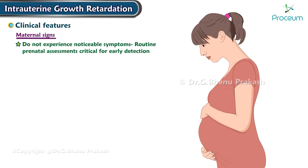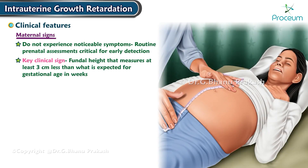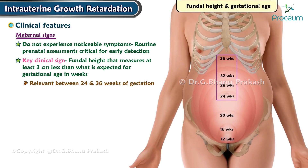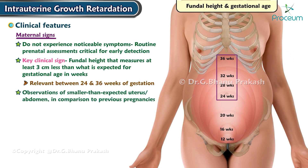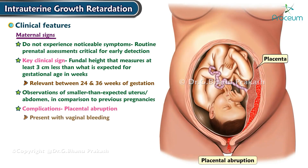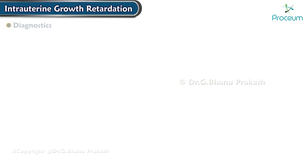Many mothers do not experience noticeable symptoms, making routine prenatal assessments critical for early detection. A key clinical sign is a fundal height measuring at least three centimeters less than expected for the gestational age in weeks, particularly relevant between 24 and 36 weeks. A smaller than expected uterus or abdomen may also indicate intrauterine growth restriction. Complications such as placental abruption can present with vaginal bleeding, and there is an increased risk of preterm labor.